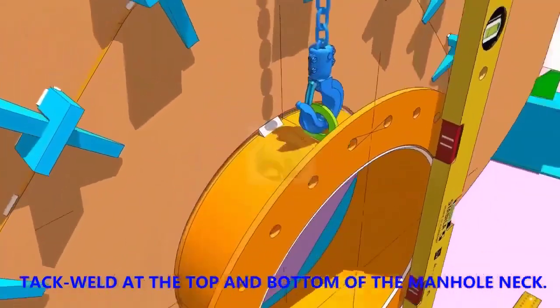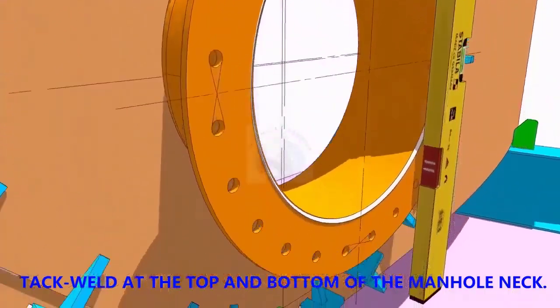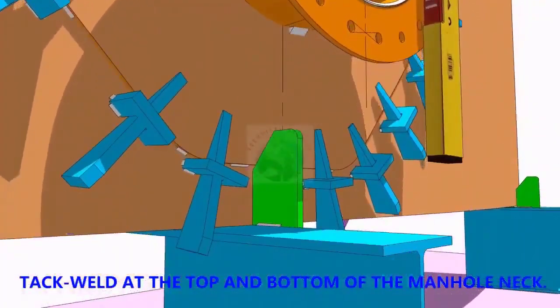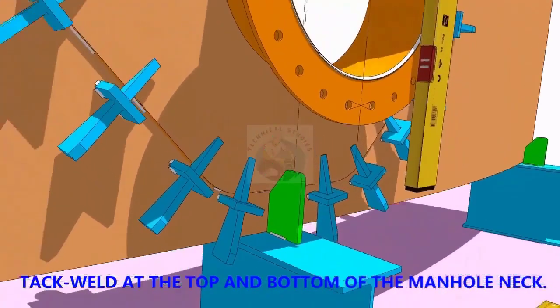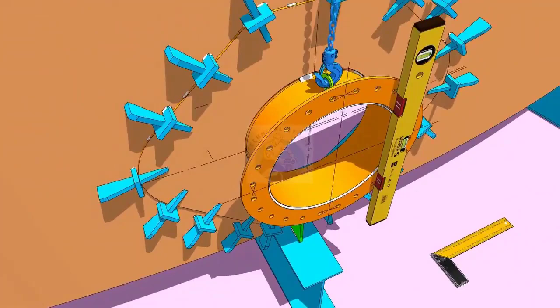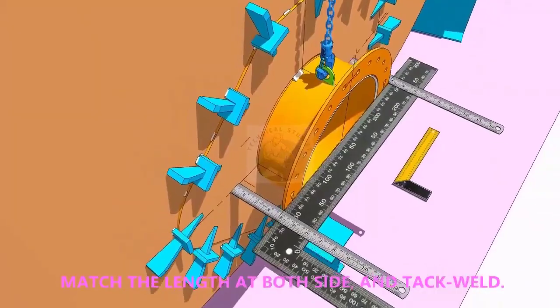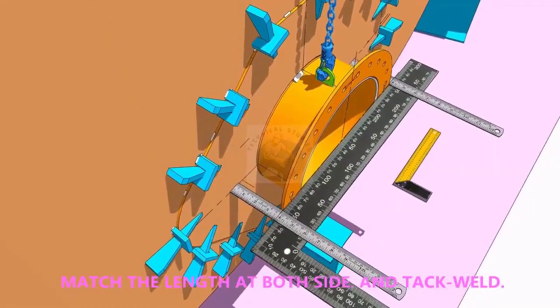TAC weld on the top and bottom side in the joint. Equal the distance on both sides of the flange as shown and TAC weld on both sides.